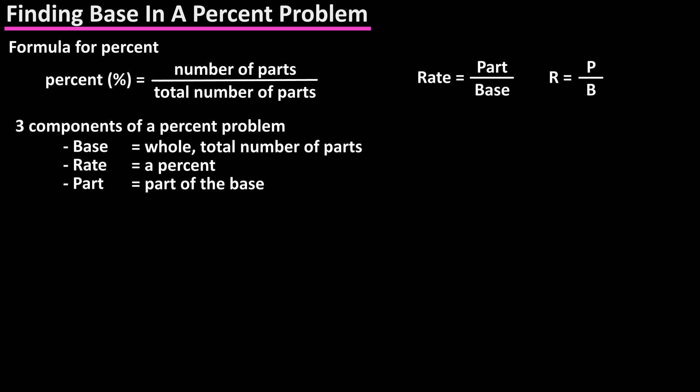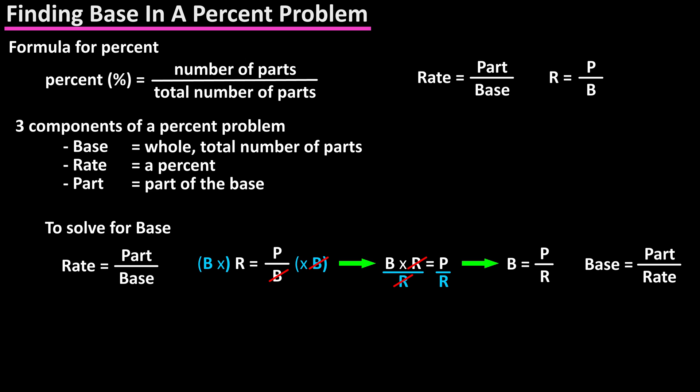The formula is rate equals part over base. If we want to find the base, we can modify the formula by multiplying both sides of the equation by the base, then divide both sides by the rate, which results in base equals part divided by rate.